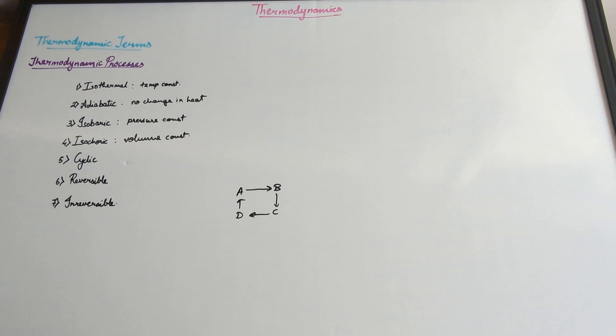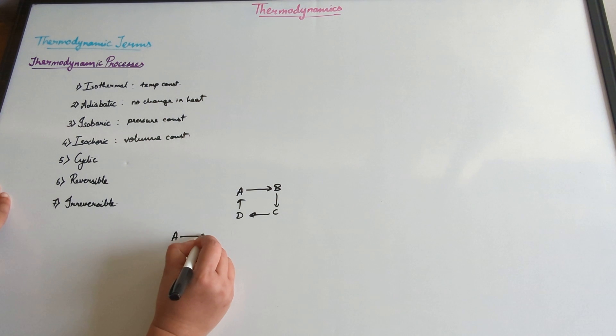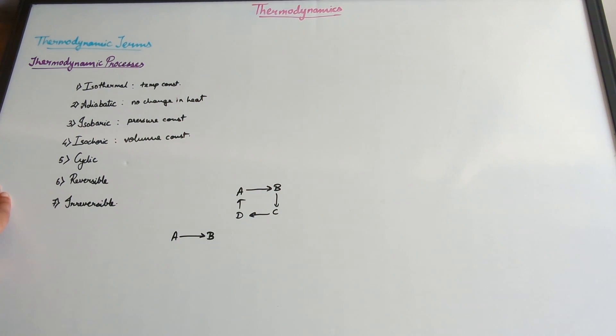Next is reversible. Now reversible as in, suppose we have a system undergoing a change from A to B. Now with a slight change of the conditions, I can convert B back to A. This is a reversible process.